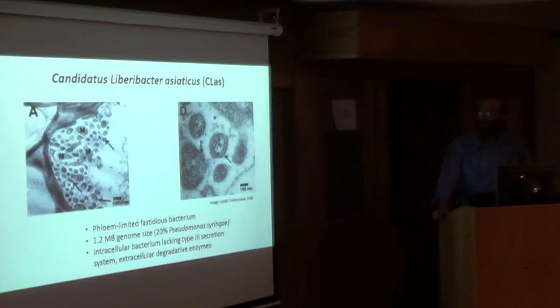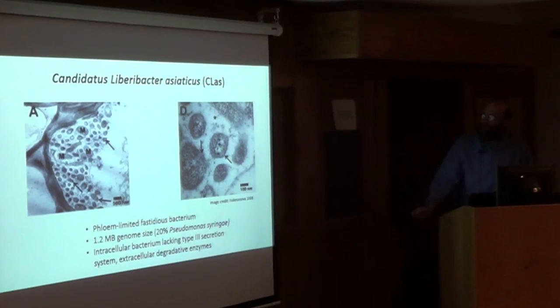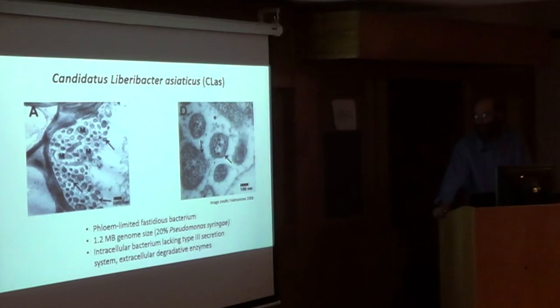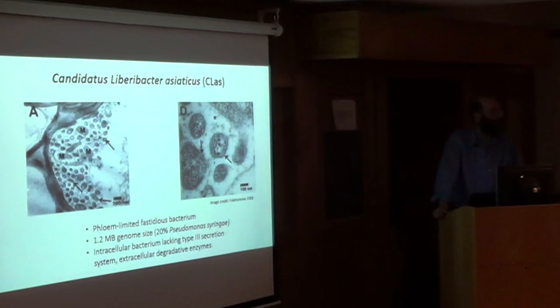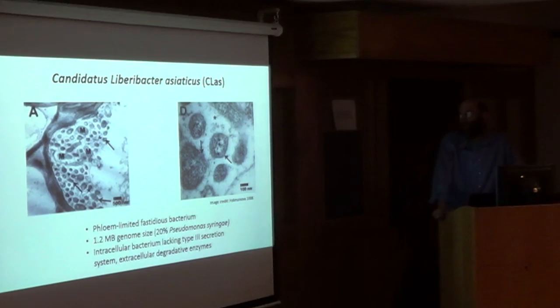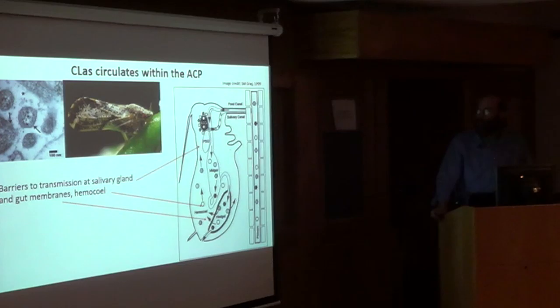The pathogen itself consists of phloem-limited fastidious bacteria. In cross-section of sieve-element cells, the M's are mitochondria and the arrows point to bacterial cells. The genome size is around 1.2 megabases — a reduced genome compared to Pseudomonas syringae at around 6 megabases. It is an intracellular bacterium that is injected directly into the cell by the psyllid, and in keeping with that, genome analysis shows it lacks classical type III secretion system genes and genes encoding extracellular degradative enzymes.